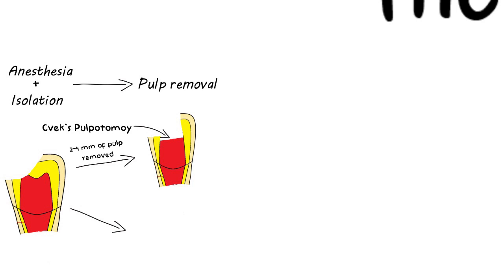When there is a larger exposure or the pulp was exposed for a very long time, then conventional pulpotomy can be done in which coronal pulp is removed at the level of apical constriction.